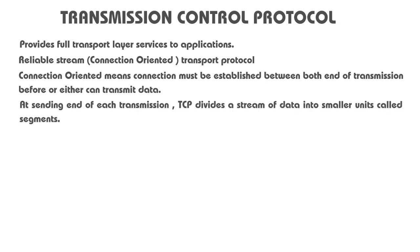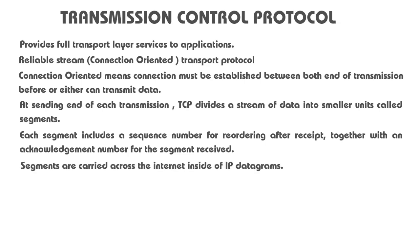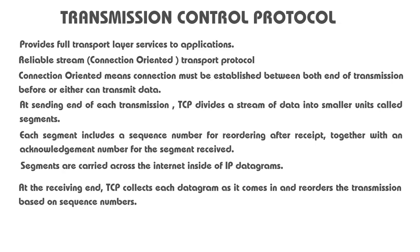At the sending end of each transmission, TCP divides a stream of data into smaller units known as segments. Each segment includes a sequence number for reordering after receipt, together with an acknowledgement number for the segments received. Segments are carried across the internet inside IP datagrams. At the receiving end, TCP collects each datagram as it comes in and reorders the transmission based on the sequence number.